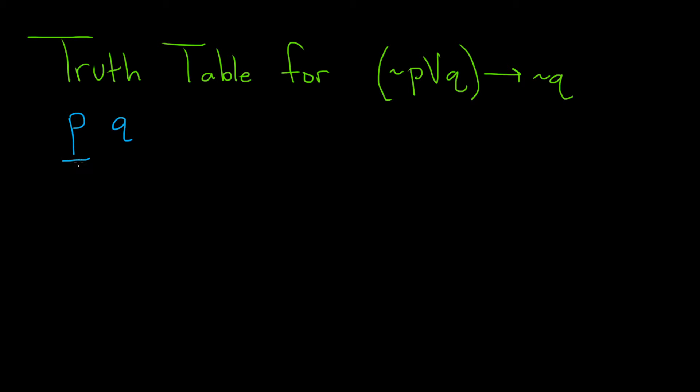A simple case is when they're both true, so true, true. Another case is when the first one is true and the last one is false. And then we can switch these, so we have false, true. And the very last case would be when they are both false, so false, false.